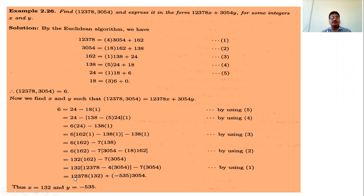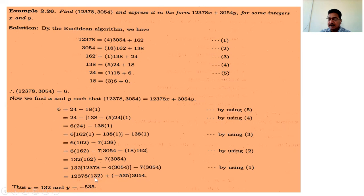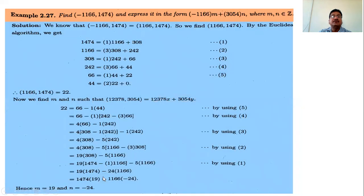If you verify this calculation using a calculator — that is, compute 12378 times 132 minus 535 times 3054 — you get the answer 6, confirming the result.